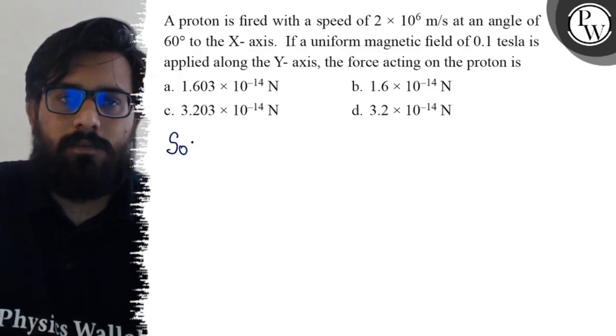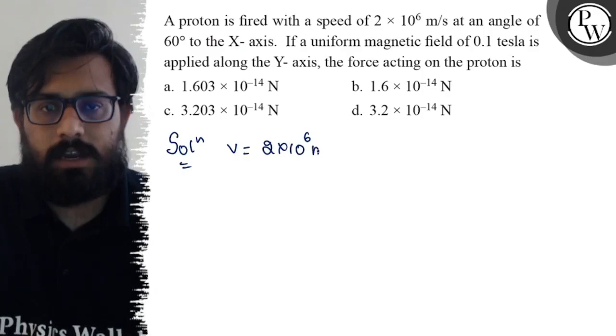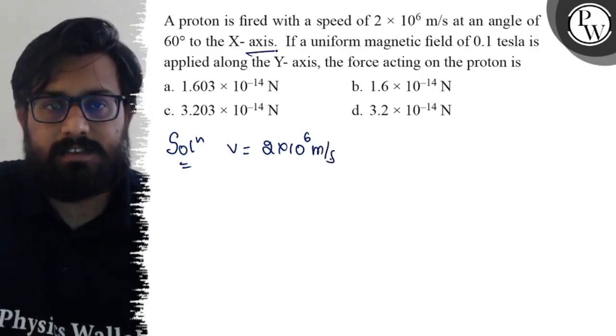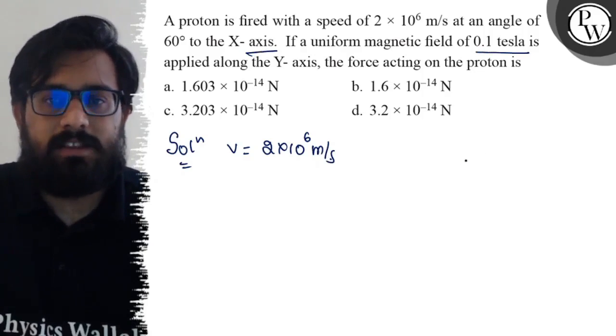So, here in this question, we have a proton and it is fired with a velocity of 2 into 10 to the power 6 meter per second at an angle of 60 degree to the x-axis. If the magnetic field of 0.1 tesla is applied along the y-axis, so it's like this.